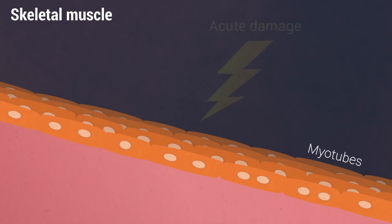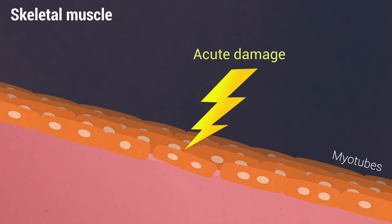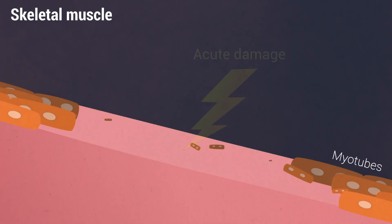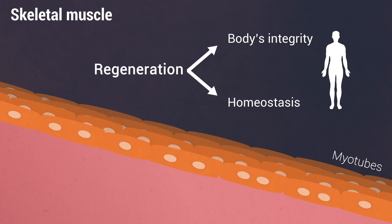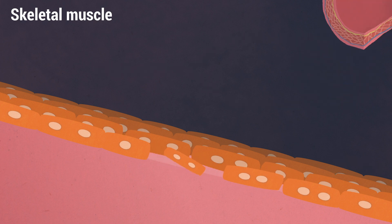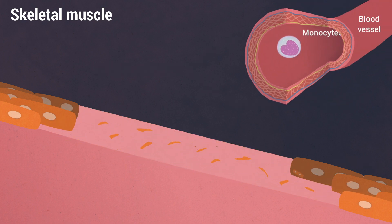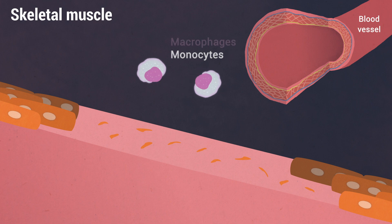Skeletal muscles frequently undergo acute damage during an organism's lifetime, and their complete regeneration is critically important to maintain the body's integrity and homeostasis. Immune cells, and in particular monocyte-derived macrophages, have a dual role during damage and regeneration.